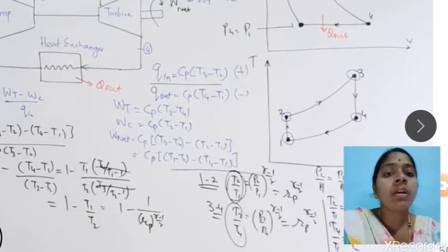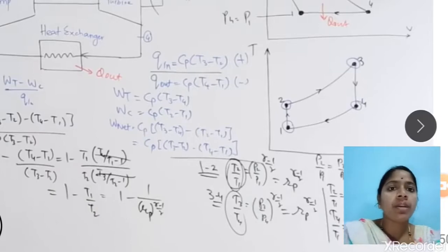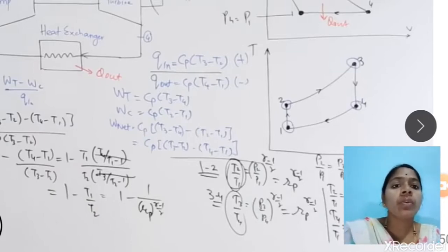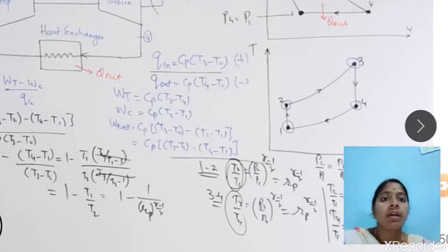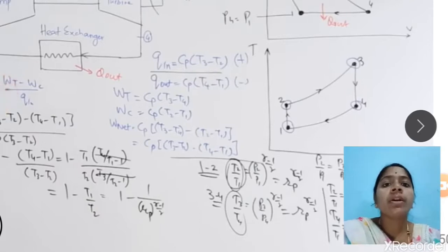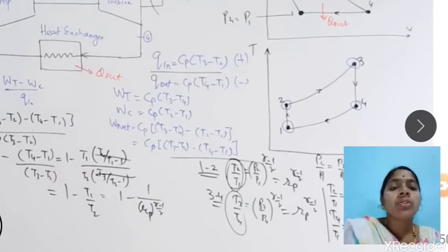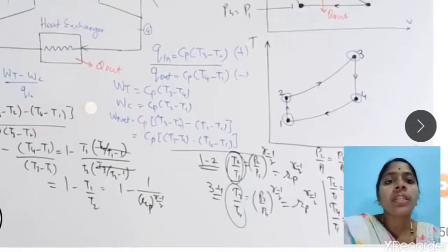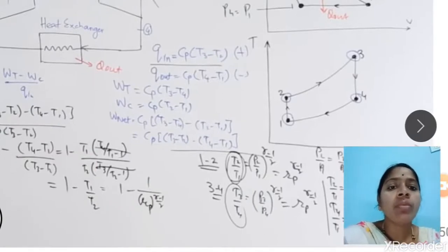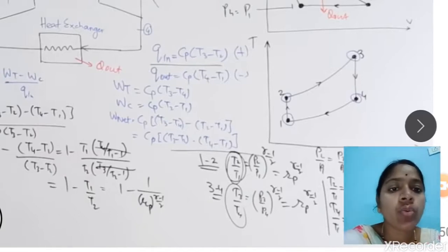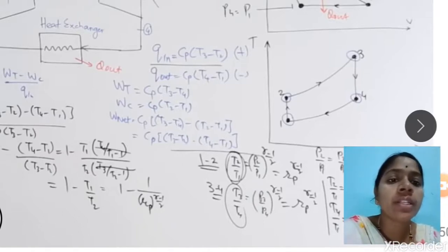The efficiency of the Brayton cycle is defined as net work output divided by total heat input, written as η = W_net / Q_in. By substituting WT, WC, and Q_in into the formula and simplifying, the efficiency becomes: η = 1 − (T4 − T1) / (T3 − T2). Further simplification is done by taking T1 as common from the numerator and T2 as common from the denominator.